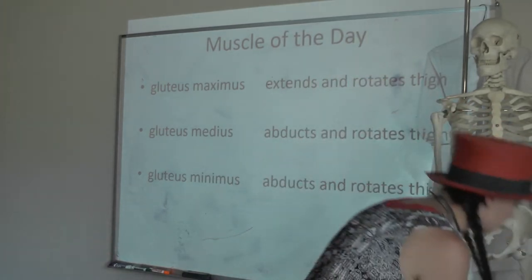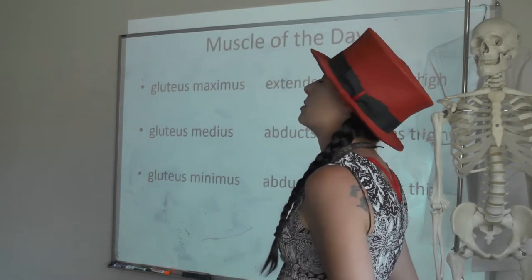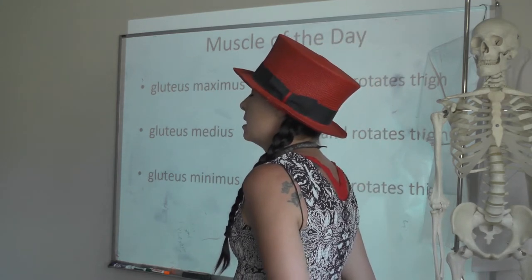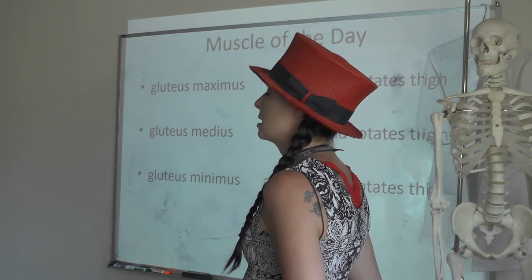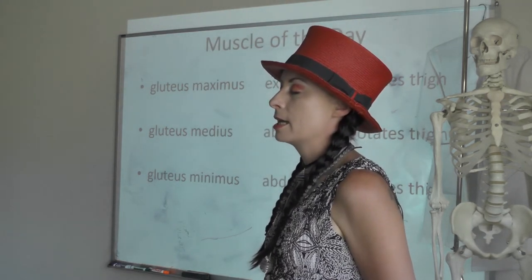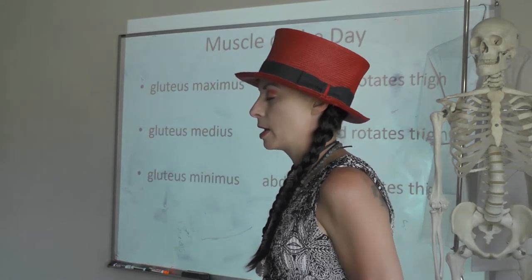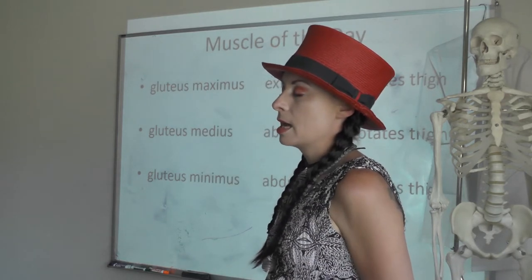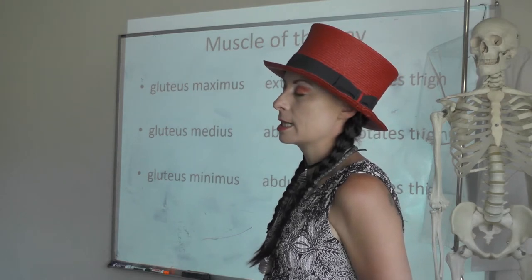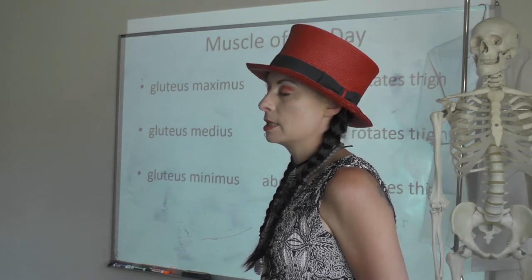Muscle meditation: breathe in gluteus maximus, breathe out — extends and laterally rotates the thigh. Breathe in gluteus medius, breathe out — abducts and medially rotates the thigh. Breathe in gluteus minimus, breathe out — abducts and medially rotates the thigh.